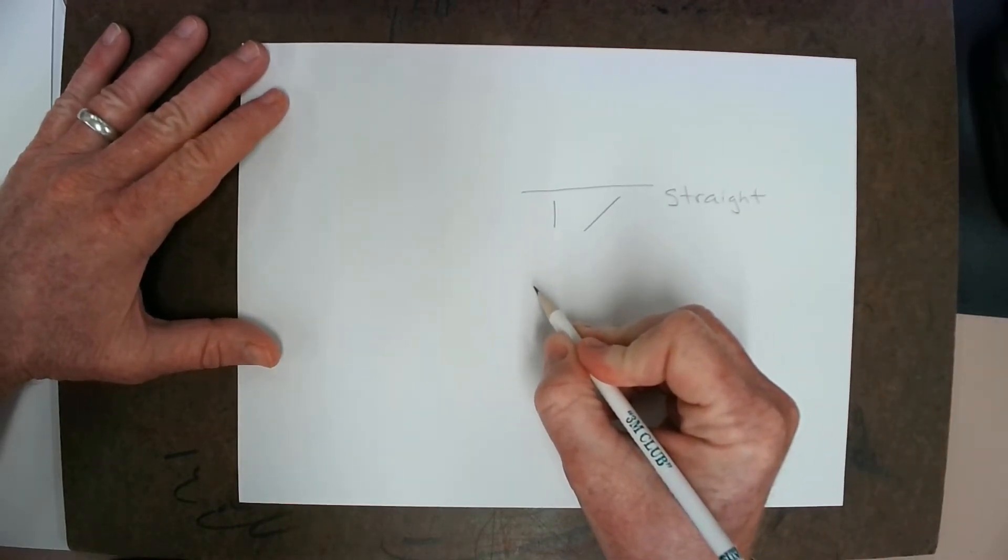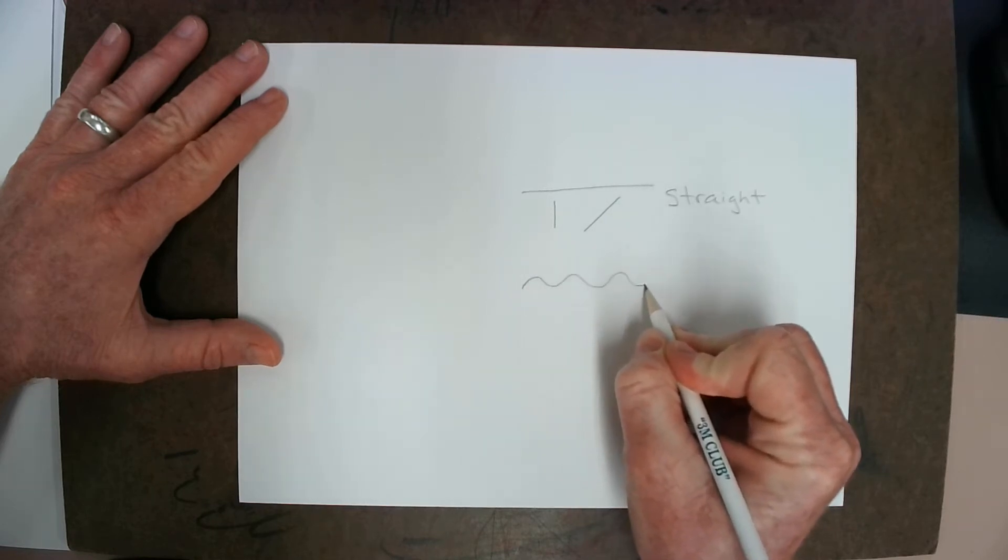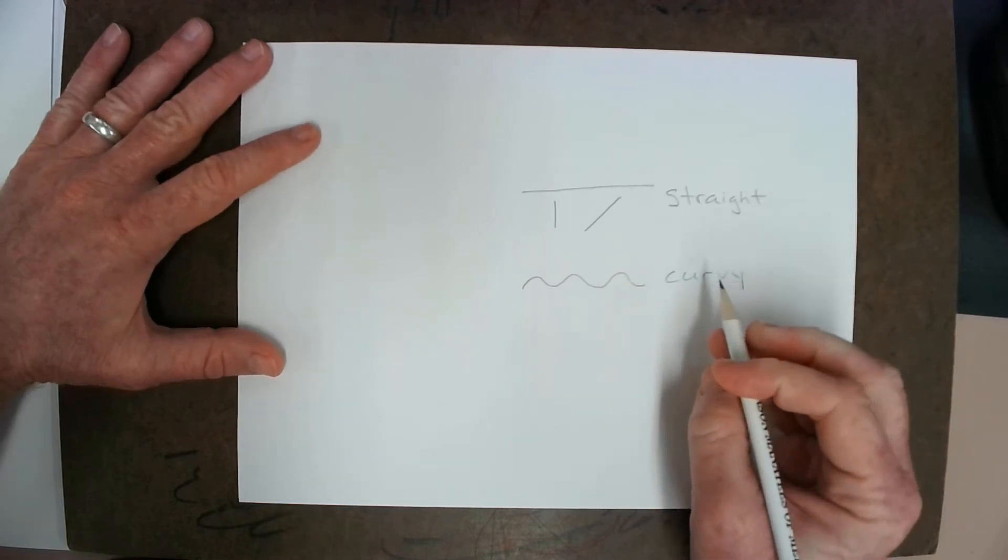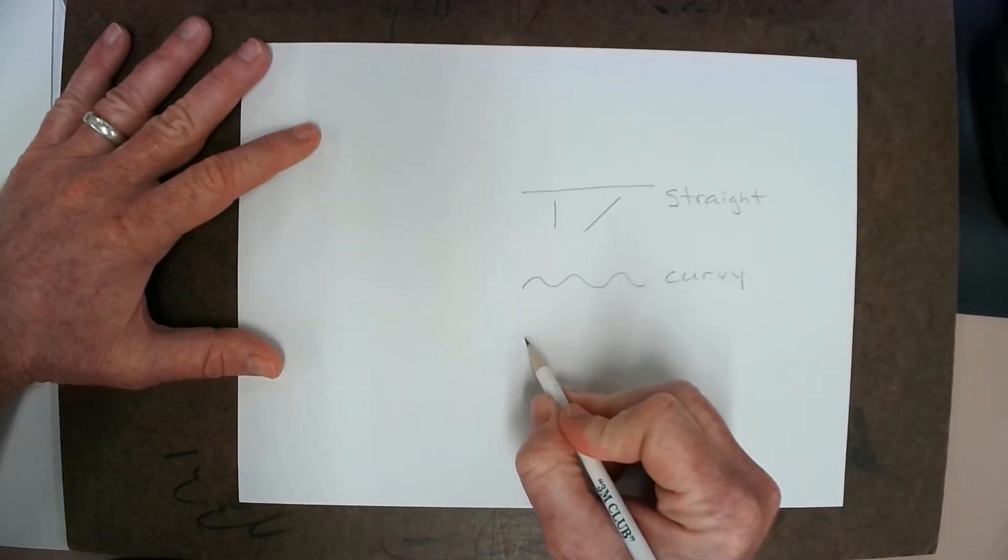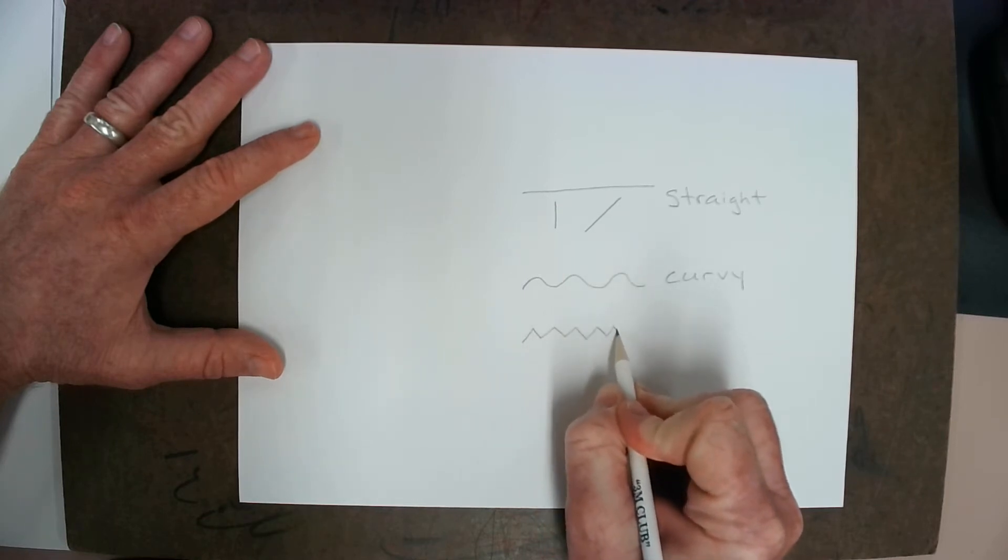The next type of line I'm thinking of is a curvy line. And curvy lines don't have any sharp edges. The other type of line we have, kind of like shark's teeth, these are called zigzag lines.